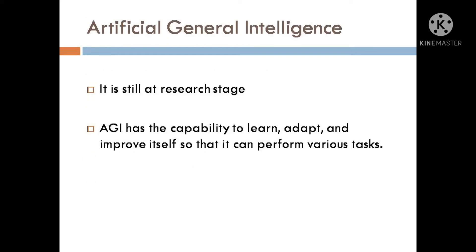Artificial General Intelligence is still at the research stage. These systems will be as intelligent as human beings — that is, capable of learning and developing. Unlike Artificial Narrow Intelligence, Artificial General Intelligence has the capability to learn, adapt, and improve itself so that it can perform various tasks.